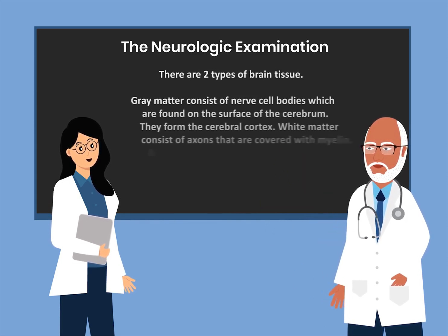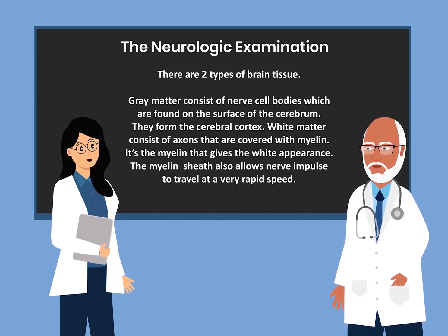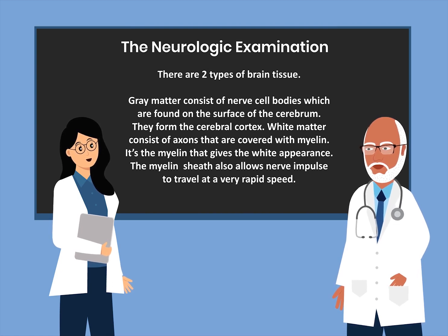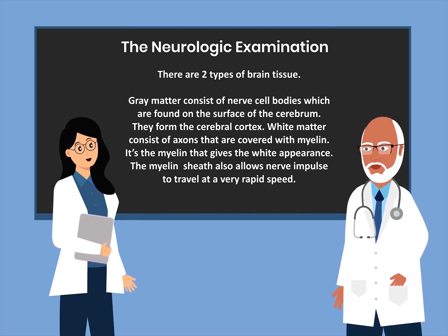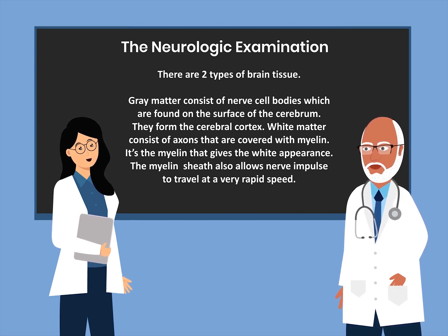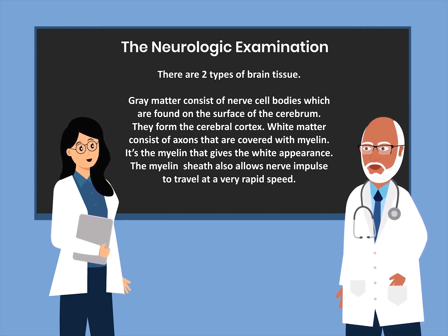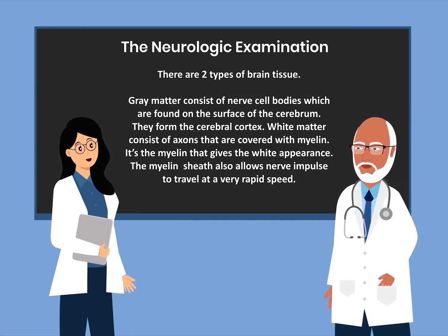There are two types of brain tissue: gray matter and white matter. Gray matter consists of nerve cell bodies, which are found on the surface of the cerebrum, and they form the cerebral cortex. White matter consists of axons that are covered with myelin. It's the myelin that gives the white appearance. The myelin sheath also allows nerve impulses to travel at a very rapid speed.